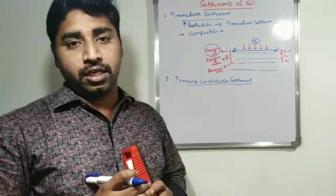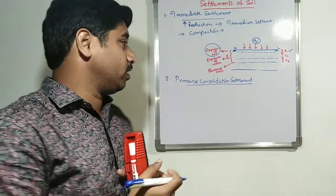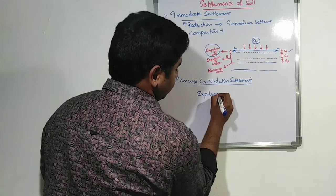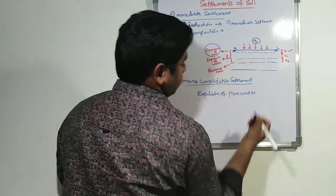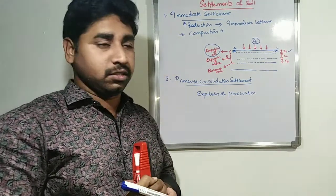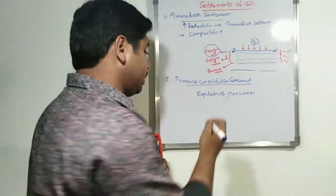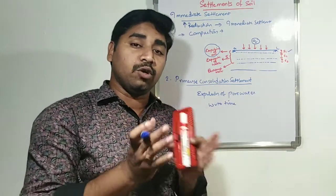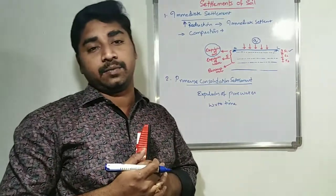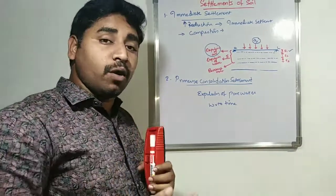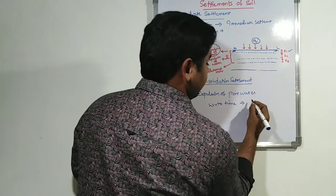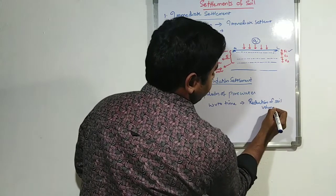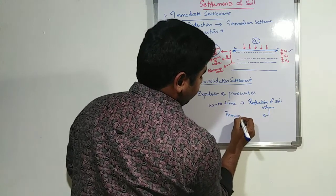Coming to primary consolidation settlement: when the load is further applied on the soil, it initiates expulsion of pore water from the voids, which is generally referred to as the consolidation process. With respect to time, as time goes on, more water gets expelled out. On expulsion of pore water pressure from the soil, it leads to a reduction in soil volume, which is referred to as primary consolidation settlement.